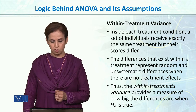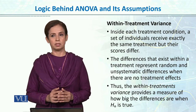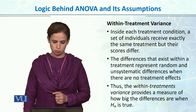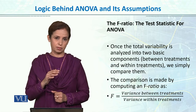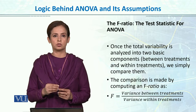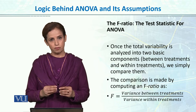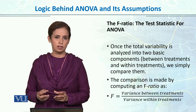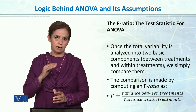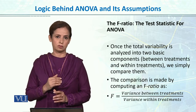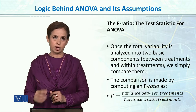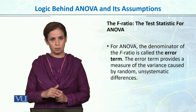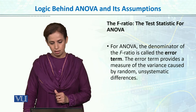Within-treatment variance provides a measure of how big the differences are when the null hypothesis is true — that is, if we assume our three groups are equal. Within variance tells us how much error variance exists even if the null hypothesis is true. The F-ratio is calculated as the ratio of between-treatments variance divided by within-treatment variance. For ANOVA, the denominator of the F-ratio is called the error term, with within variance in the denominator and between variance, due to treatment conditions, in the numerator.